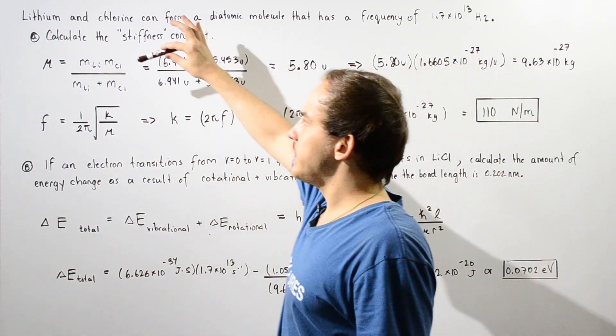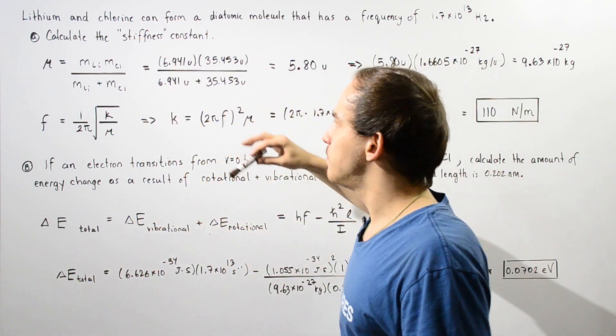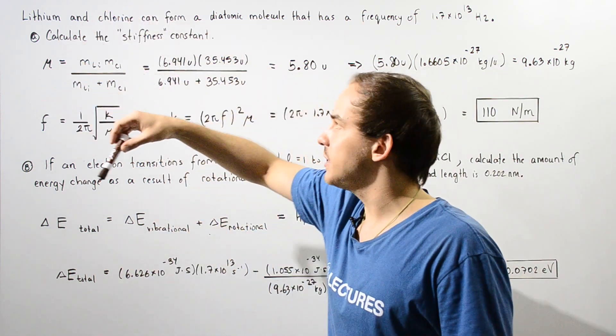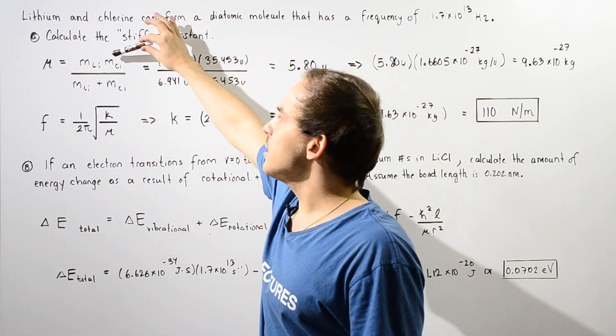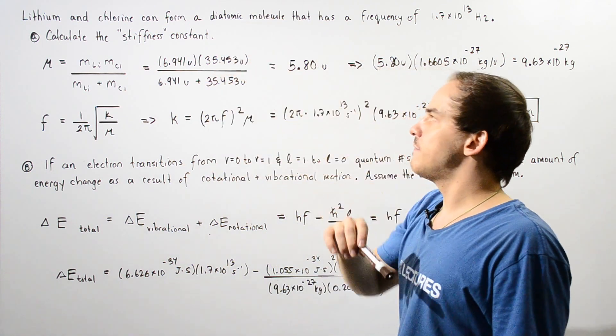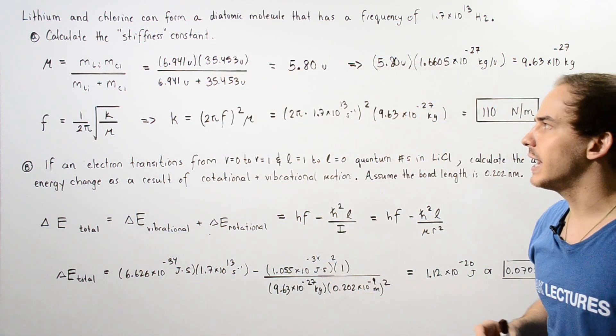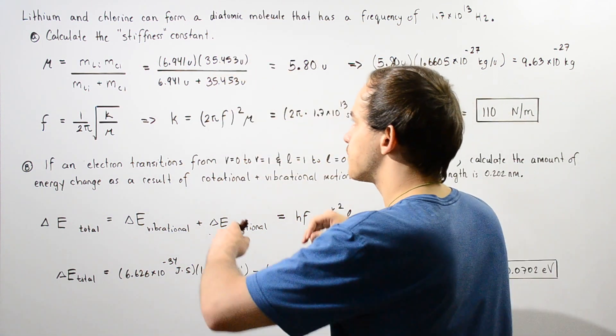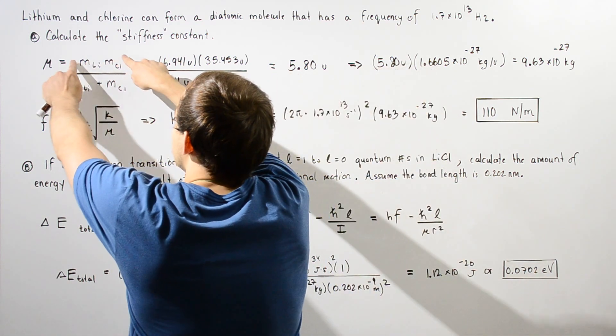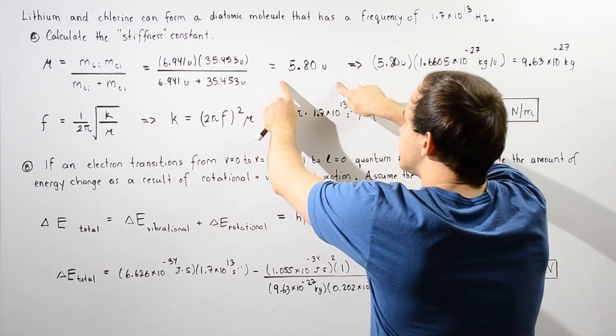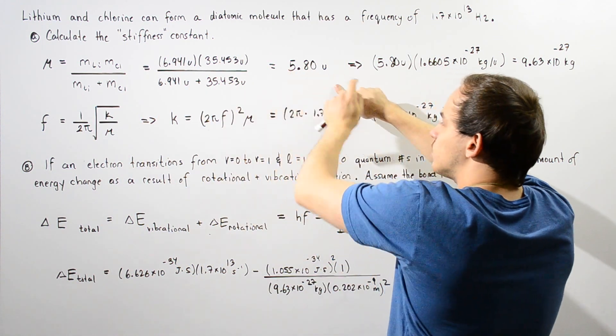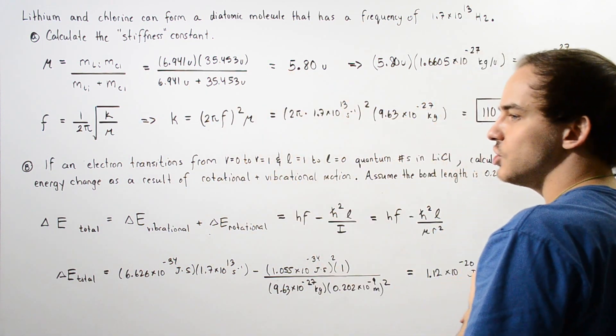If we use our periodic table, we see that the mass of lithium is 6.941 unified atomic mass units and the mass of chlorine is 35.453 unified atomic mass units. We take the product of the masses and divide that by the sum of the masses, and that gives us about 5.80 unified atomic mass units.